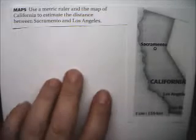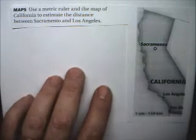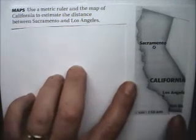Hello, this is Solving Equations, Cross Products, Example 4. In Example 4, we have another little story problem. This has to do with a map — a very common application of proportions.